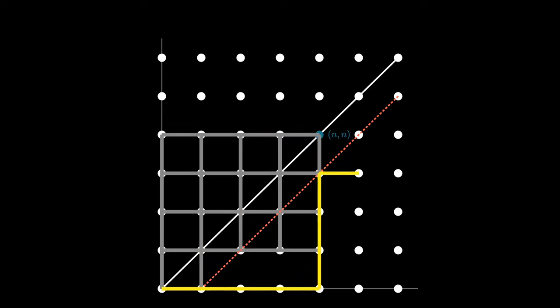They all seem to be hitting the same point. So what we're getting from this collection of reflected lattice paths seems to be a collection of lattice paths that still starts at the origin (0,0), but this time ends at a different point.